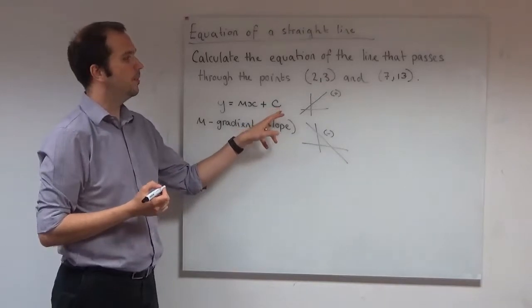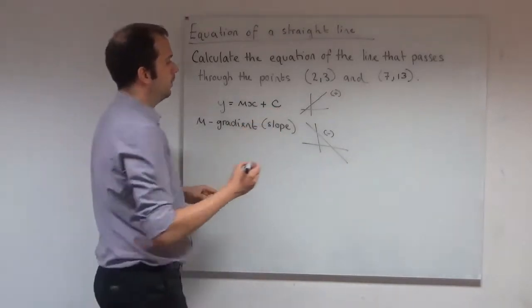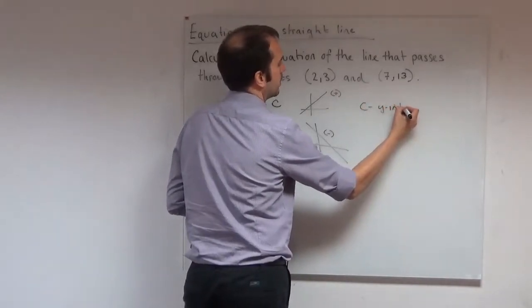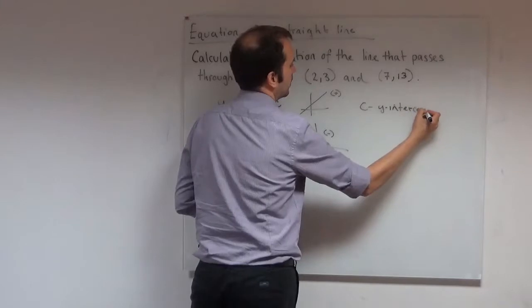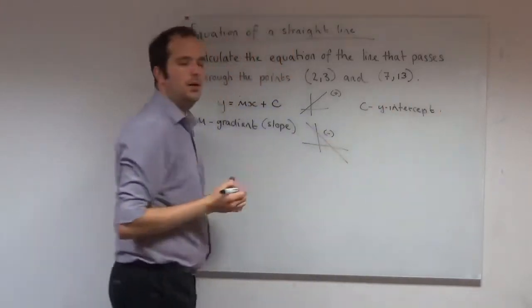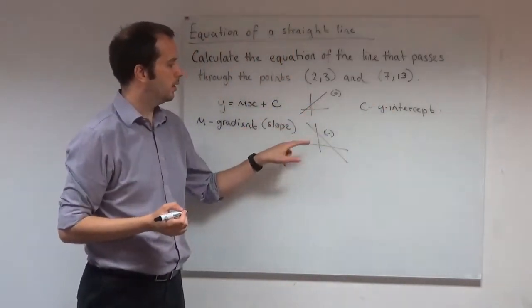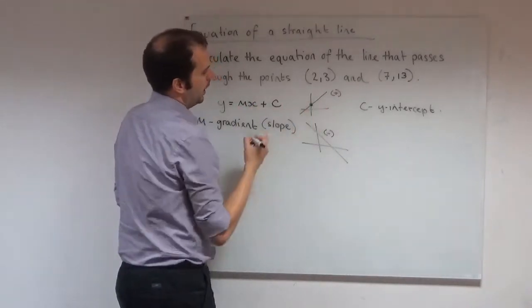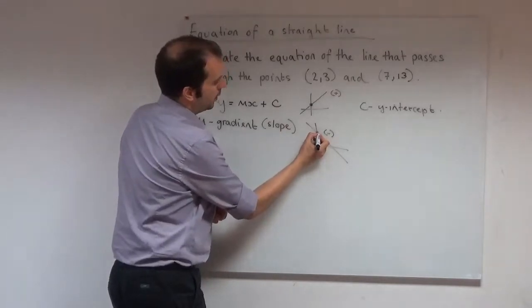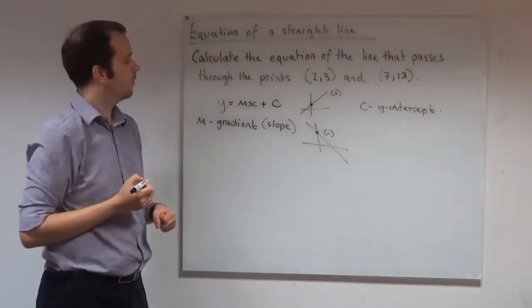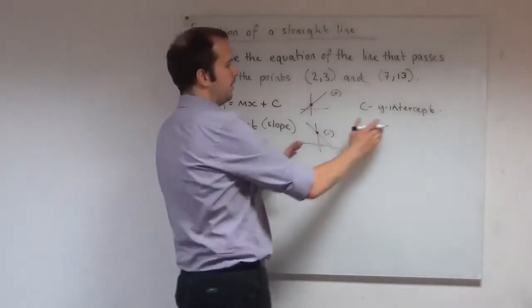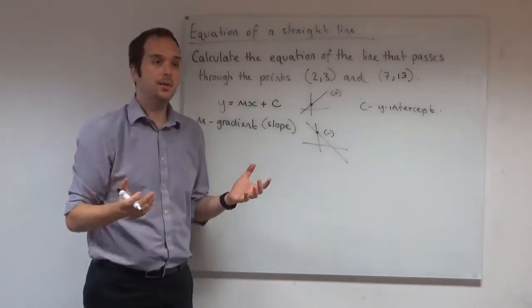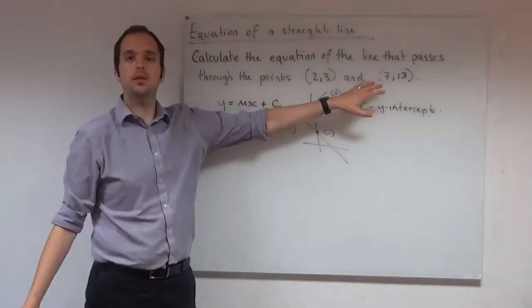The other term in our straight line is the c. And our c is the y-intercept. You'll see basically where the line crosses your y-axis. So here it would be this point here and this point here in this diagram. So we've defined everything. We've defined what our m is and our c. So let's work out the equation of the straight line that passes through these two points.